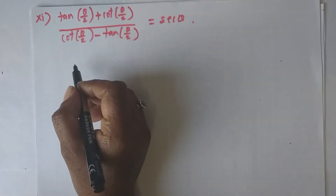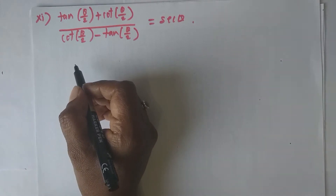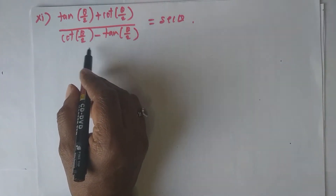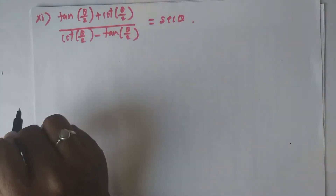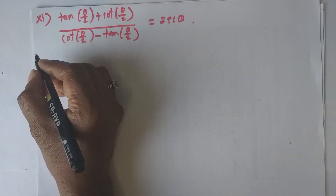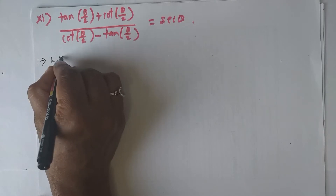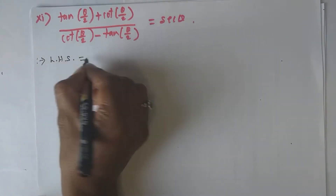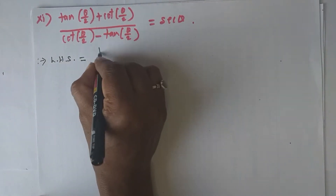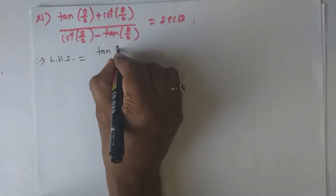Dear students, today we will see the remaining problems from Exercise 3.3 from Chapter Trigonometry 2. All these problems are 'prove the following', therefore we have to prove that the left hand side is equal to the right hand side in each and every problem.